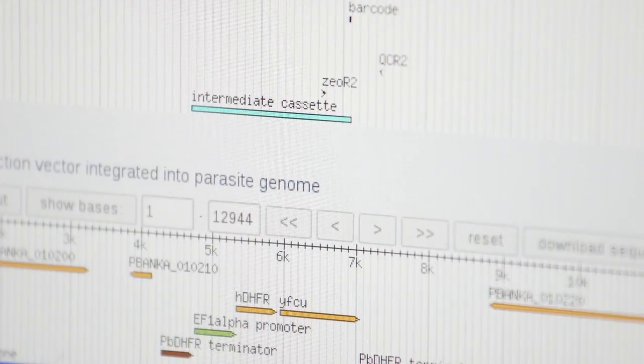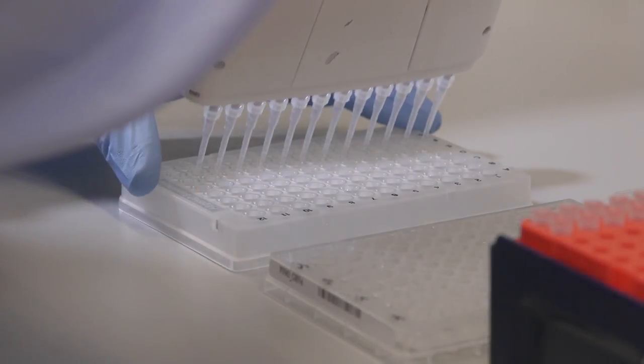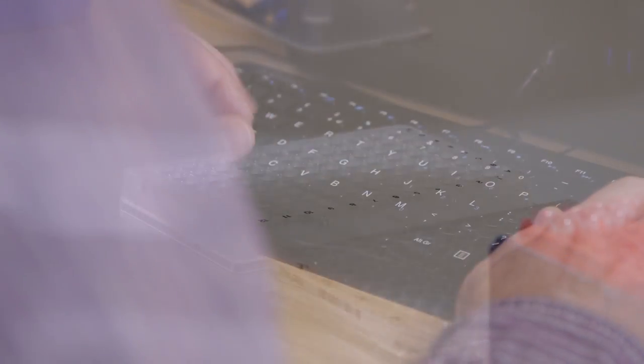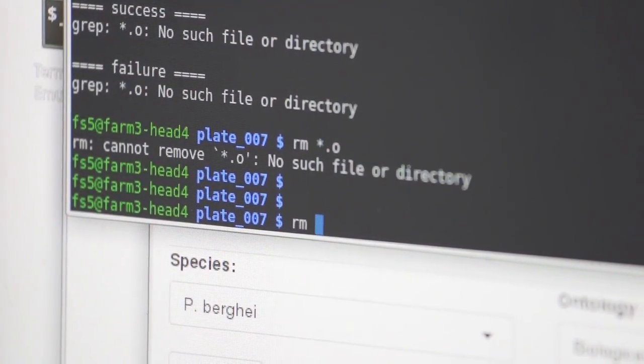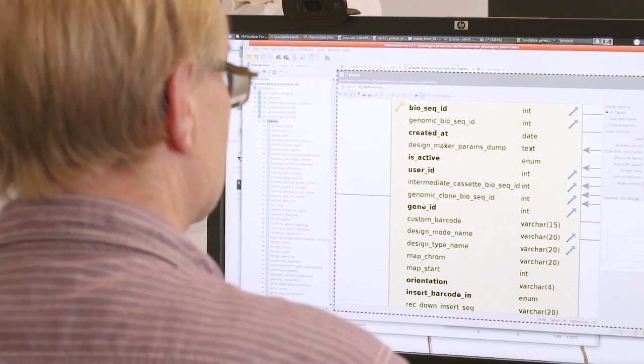A vector is a DNA molecule that we use to manipulate the genome of the parasite in a specific way. We can delete a gene, we can modify a gene to do something else, we can change the way it's being used by the parasite.